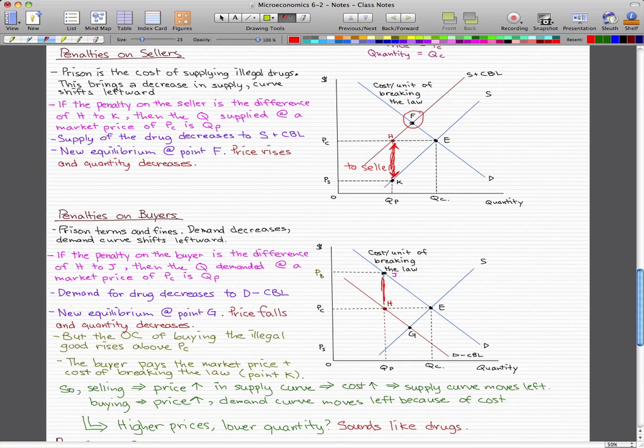So this red line here that I'm drawing is the penalty to, which I am lagging right now. So this is the penalty to the buyer. From the point, the difference between J to H, that is the penalty to the buyer.